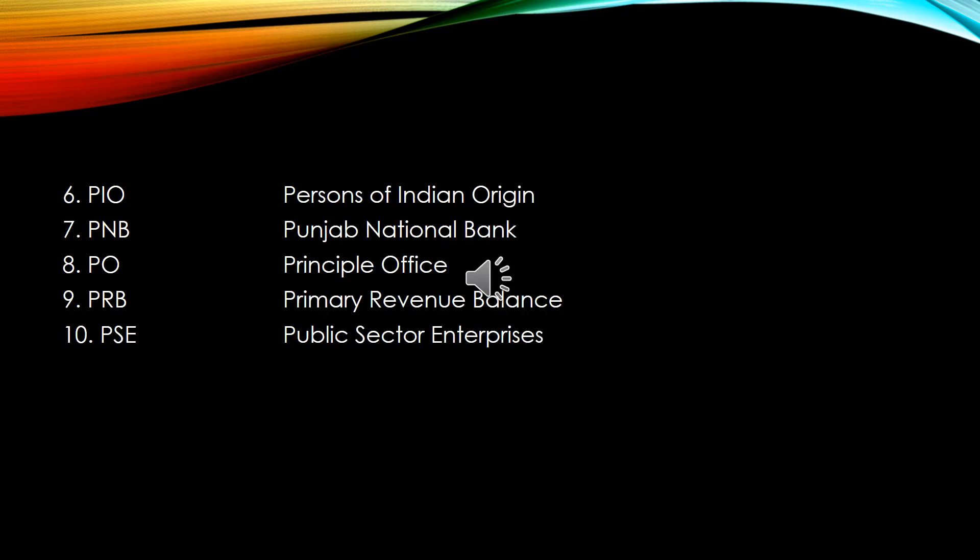6. PIO – Persons of Indian Origin. 7. PNB – Punjab National Bank. 8. PO – Principal Office. 9. PRB – Primary Revenue Balance. 10. PSE – Public Sector Enterprises.